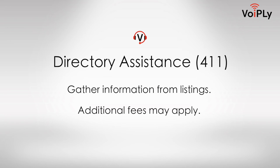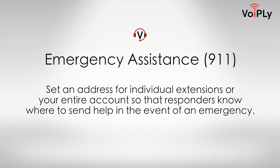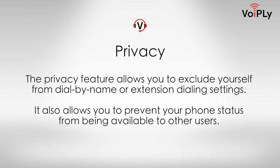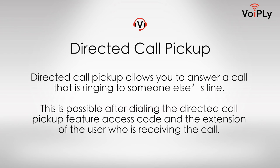Directory Assistance (411): Gather information from listings; additional fees may apply. Emergency Assistance (911): Set an address for individual extensions or your entire account so that responders know where to send help in the event of an emergency. Privacy: Allows you to exclude yourself from dial-by-name or extension dialing settings, and prevents your phone status from being available to other users. Directed Call Pickup: Allows you to answer a call ringing to someone else's line by dialing the Directed Call Pickup feature access code and the extension of the user receiving the call.